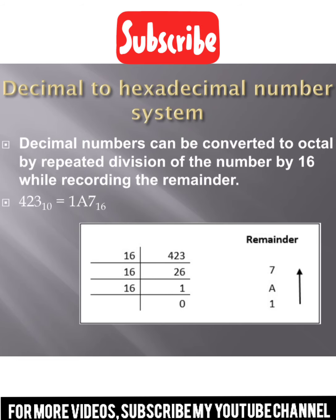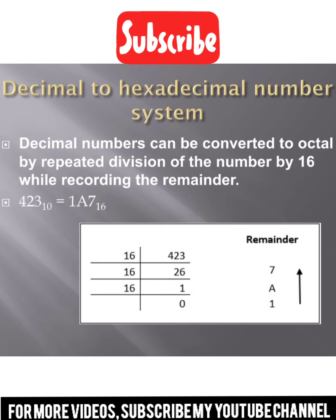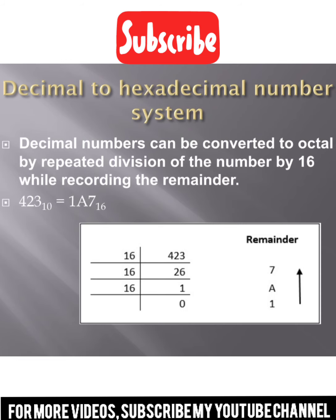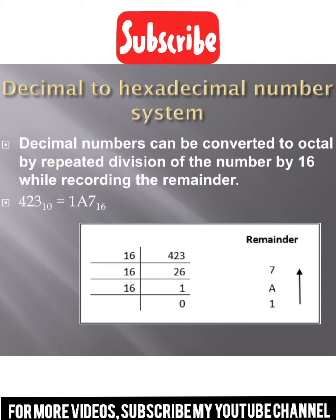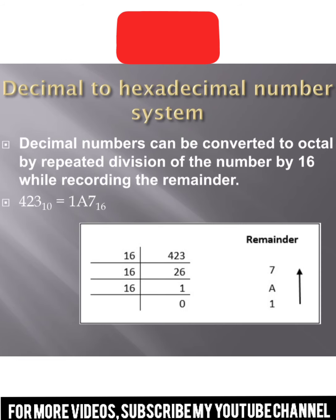Using LCM with 16: we convert 423. Dividing, 16 goes into 423 — we get a small number and remainder 7. Then 16 goes one time into the quotient, giving remainder 11. You know that 10 in hexadecimal is which letter — 10 is the value A.